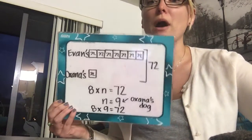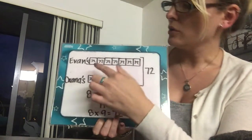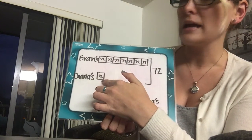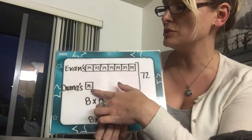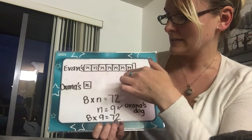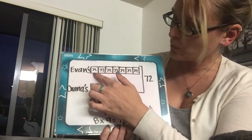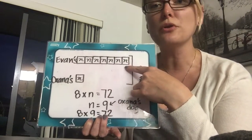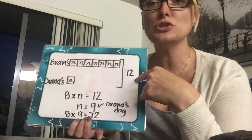I've already drawn that model for you. This is called a bar model. In this bar model, I've got Evan here and Oksana here. Oksana is our unknown — we don't know how much Oksana's dog weighs, but we do know Evan's dog is seven times as big as Oksana's, so it's like seven of Oksana's. That's why I made seven boxes: one, two, three, four, five, six, seven. The other piece of information we know from the word problem is that both dogs together weigh 72 pounds.